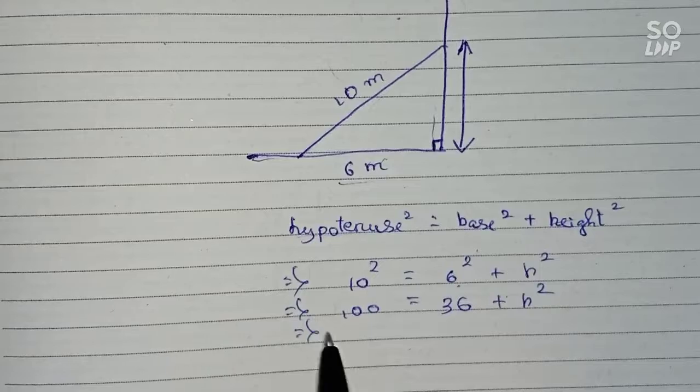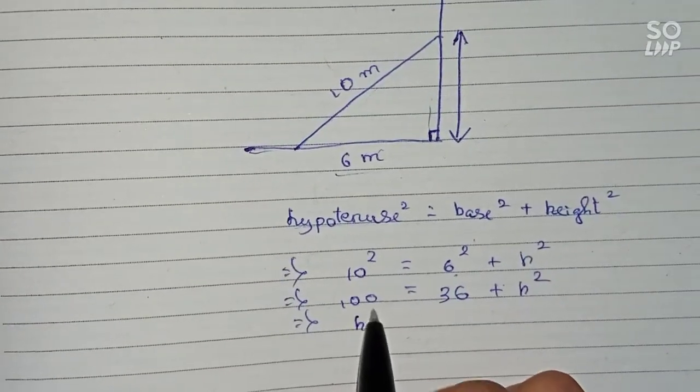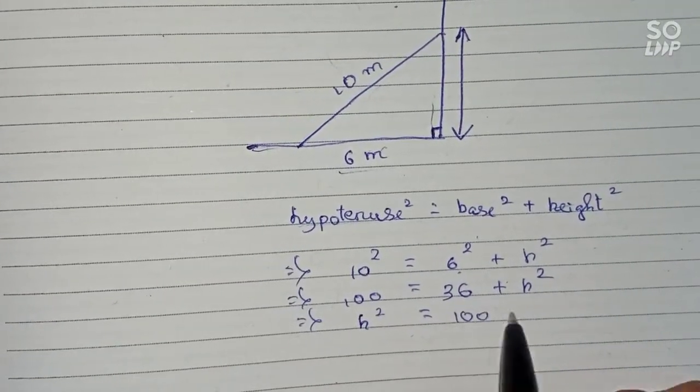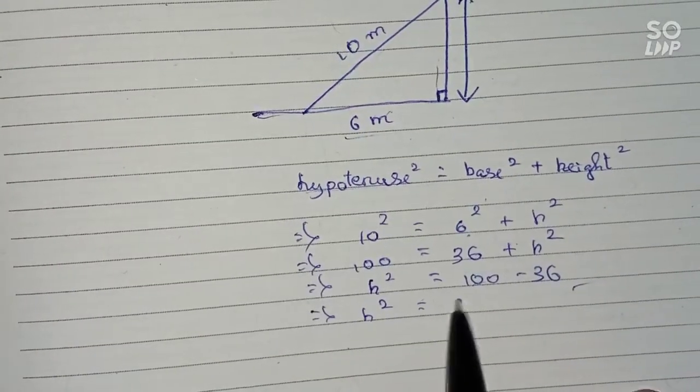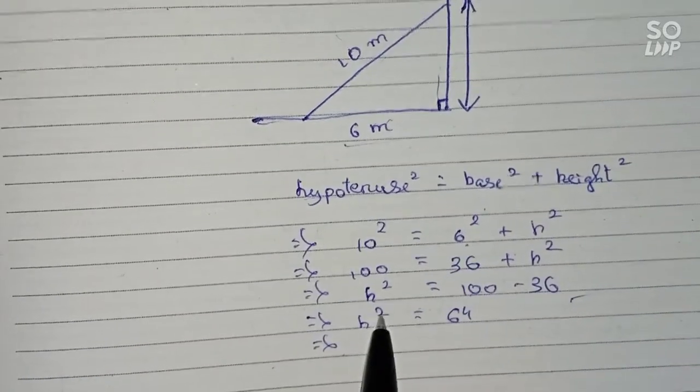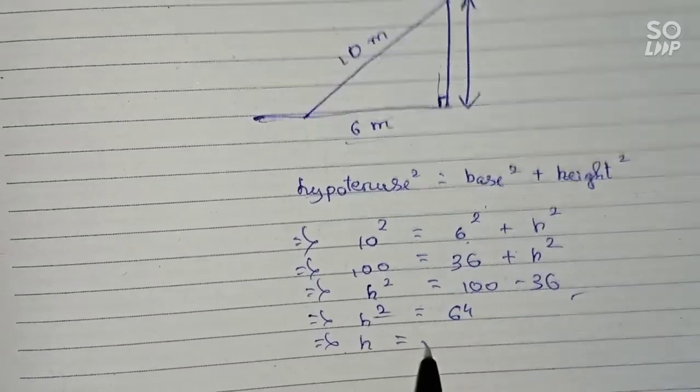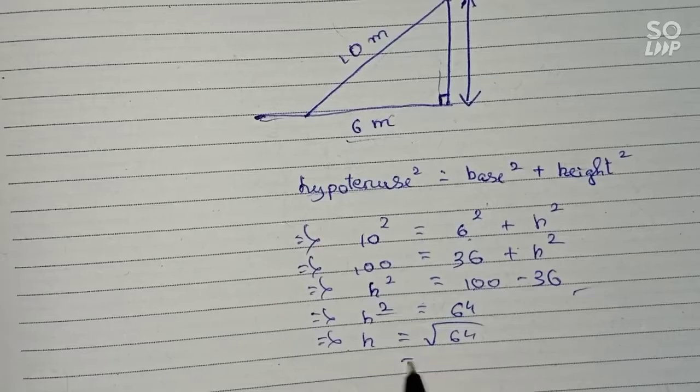Now we rearrange the equation like this: h to the power 2 is equal to 100 minus 36, which will be 64. So if we remove the square, it will be root of 64, that will be equal to 8 meters.